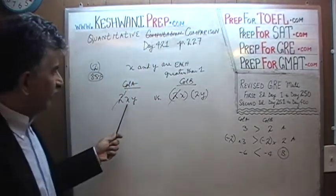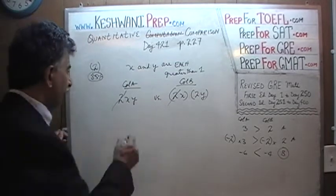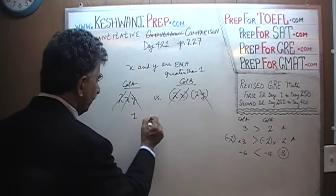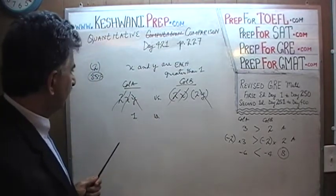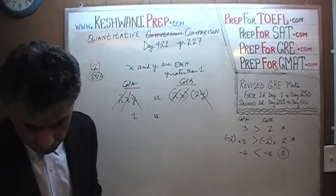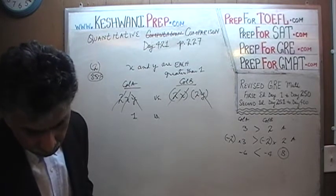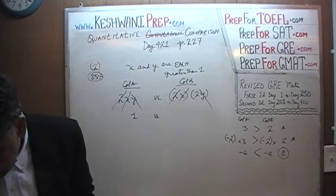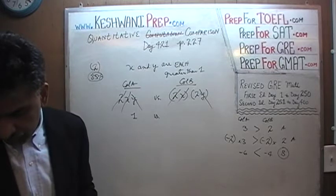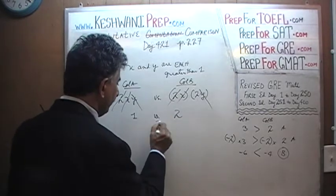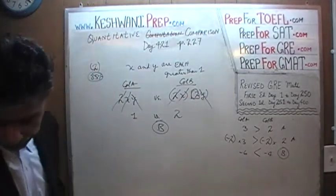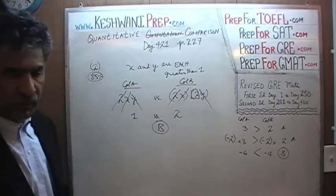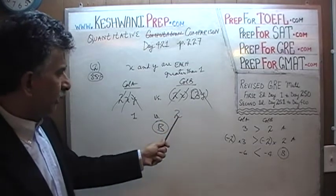So, since x and y are both greater than 1 and thus positive, we divide both columns by 2xy. That means 2xy cancels out of column A, leaving 1, and 2xy cancels from column B, leaving 2. So we have 1 versus 2. The answer is B.